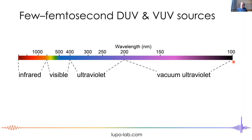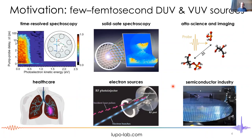Why do we want to do this? There are lots of reasons for generating ultra-short UV pulses. A lot of molecular systems and some atoms have their electronic resonances in the vacuum ultraviolet and deep ultraviolet region. You need ultra-short UV pulses to excite these systems and study them in, for example, time-resolved spectroscopy — where you excite a system, let it evolve, then probe it at a later point.